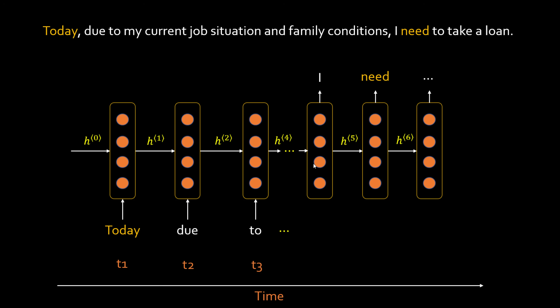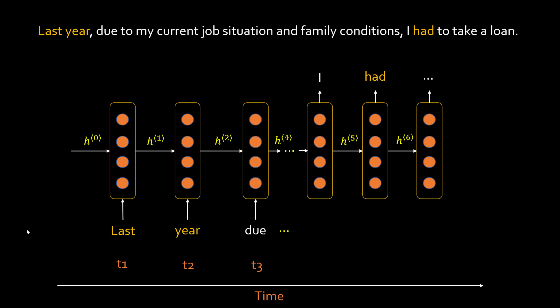Because of the vanishing gradient problem, traditional RNNs have short-term memory — they don't remember what appeared in the beginning of the sentence. They have a very short-term memory of just a few nearby words. Hence, to autocomplete this kind of sentence, RNN won't be able to do a good job. Similarly, in the second sentence, 'had' was derived based on the earlier word 'last year.'